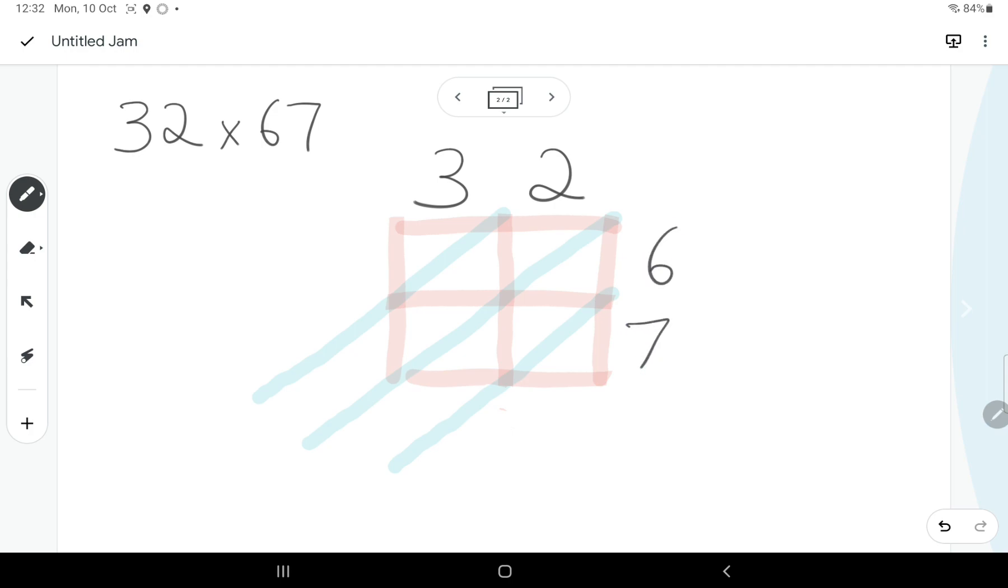Now each square represents part of the working out. This square here relates to the 2 and the 6. So 6 times 2 goes into this square and it is 12. We put the 1 there and the 8 there.